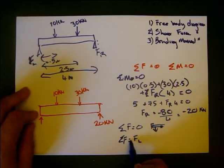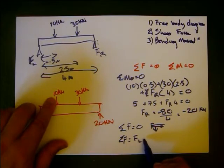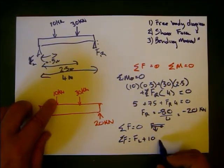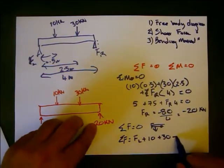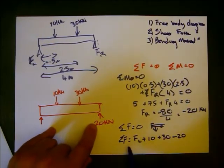If we're calling downward negative, that's going to equal force left plus 10 kilonewtons plus 30 kilonewtons minus 20, because remember we've said this is the opposite direction.